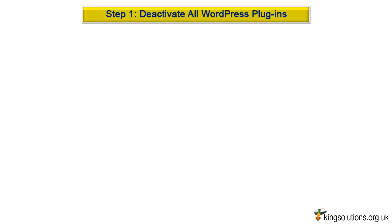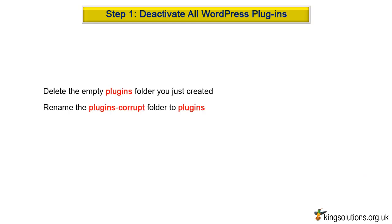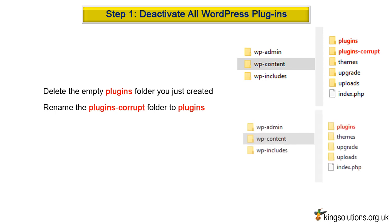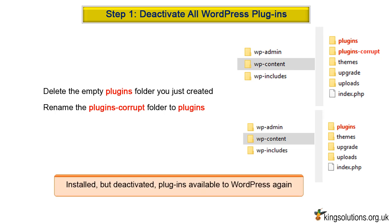Next, visit your WordPress site to see if this resolves the 503 server error. If the error has been resolved, then a plugin installed on your website was causing the error. Irrespective of the outcome, you now need to restore your plugin files. Still using your FTP client or cPanel file manager, restore the original plugins folder: delete the empty plugins folder you just created, and rename the 'plugins_corrupt' folder back to 'plugins'. This will make all your installed plugins available to WordPress again. However, these plugins will remain deactivated and must be reactivated from your WordPress dashboard.